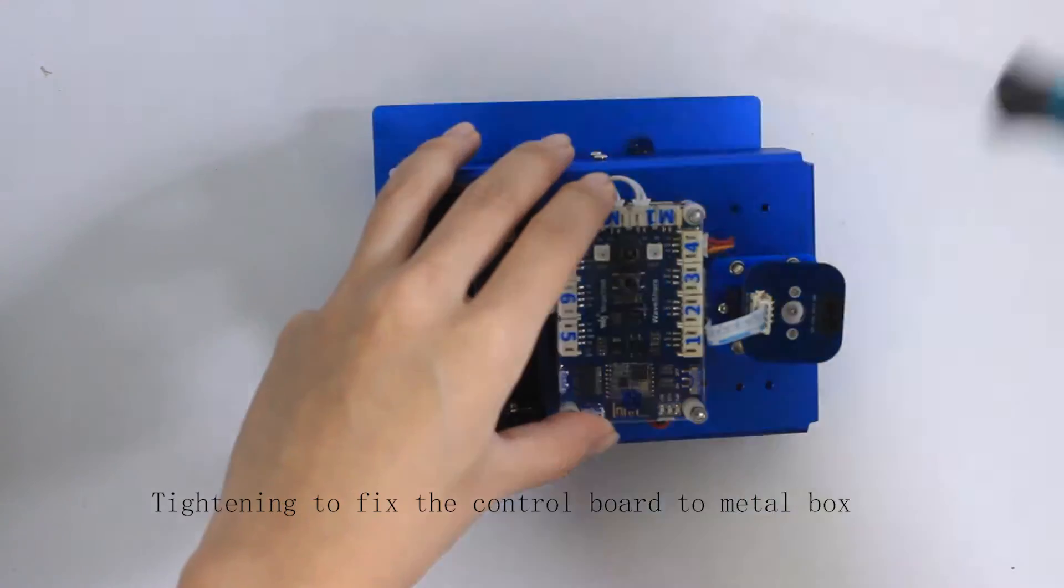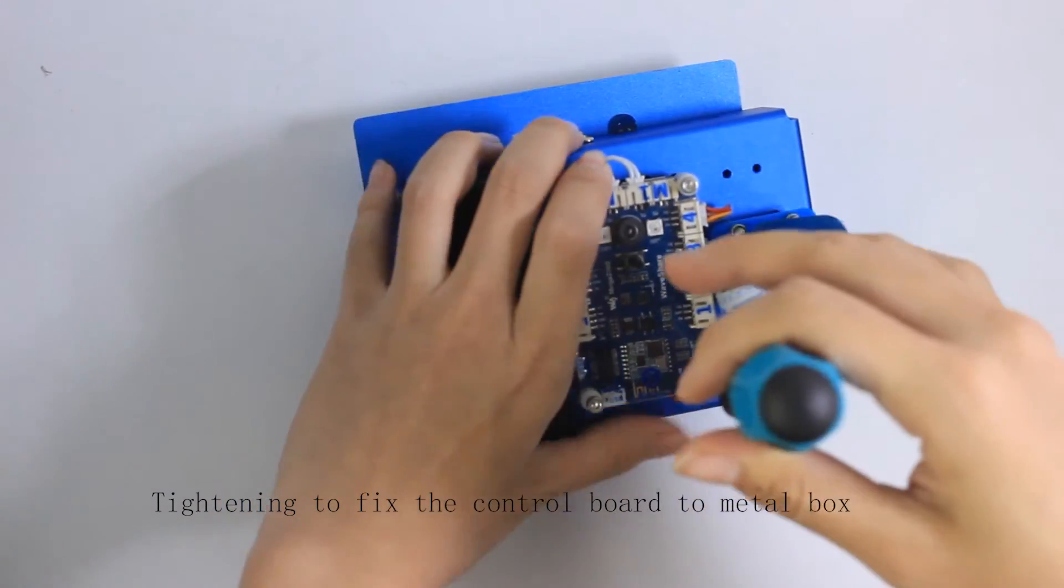After these steps, we can tighten in the control board to fix it on metal box.